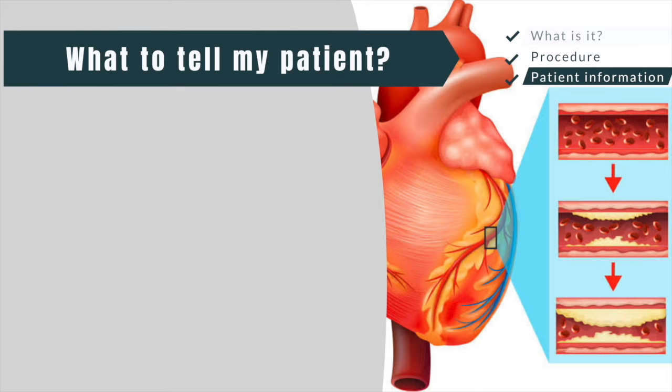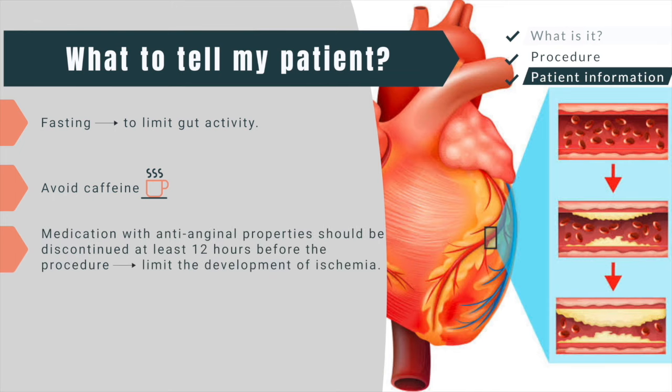Patient preparation is important to maximize the results. First, the patient should be fasting to limit gut activity that may interfere with the evaluation of the left ventricle. Second, caffeine must be avoided if a vasodilator stress test is expected. Third, the decision to withhold medication depends on patient-specific factors, but in general, blood pressure medications with anti-anginal properties such as beta blockers, calcium channel blockers, and nitrates should be discontinued at least 12 hours before the procedure, as these medications may limit the development of ischemia during the stress test.